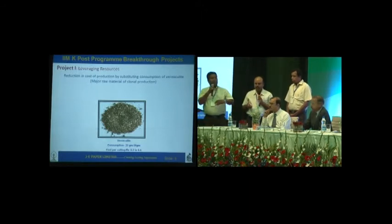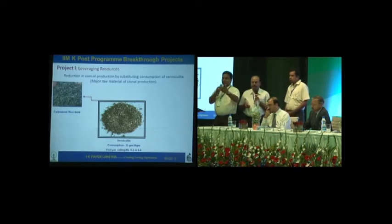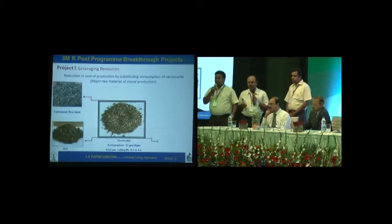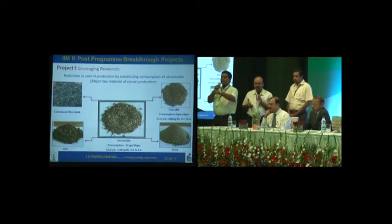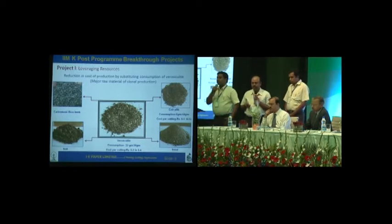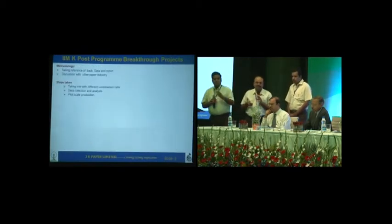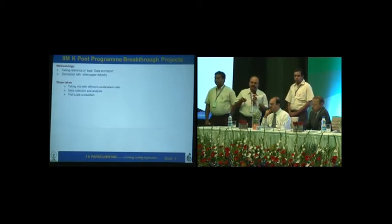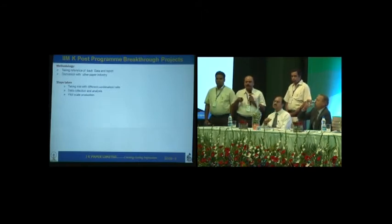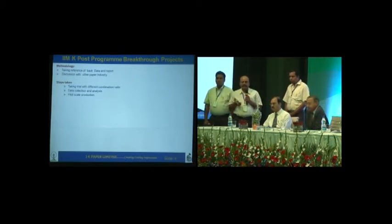Vermiculite can be substituted with other media available in our ecosystem, such as carbonized rice husk, soil, sand, and coir peat. From coir peat we have fully replaced vermiculite — consumption is 8 to 10 grams per plant and cost is 10 to 13 paisa per cutting. We started our project using the methodology of referencing back data from research and discussion with other paper industries, taking trials with different combinations, collecting and analyzing data, and based on analysis, moving to pilot scale production.